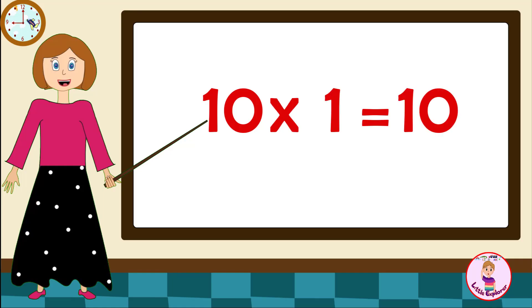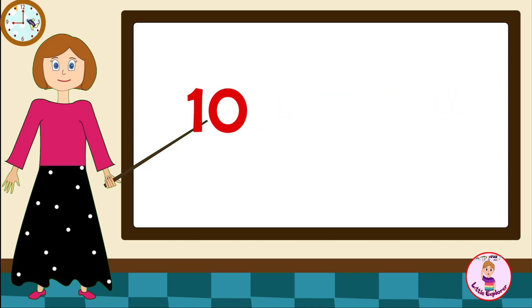Ten ones are ten, ten twos are twenty, ten threes are thirty, ten fours are forty, ten fives are fifty, ten sixes are sixty, ten sevens are seventy, ten eights are eighty, ten nines are ninety, ten tens are one hundred.